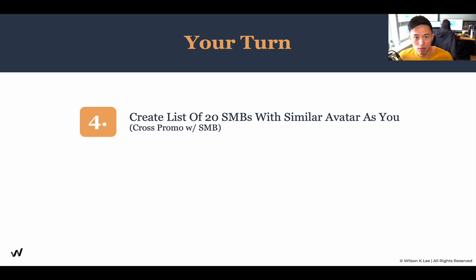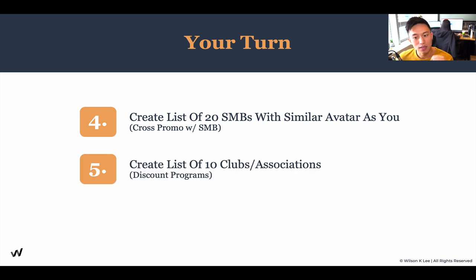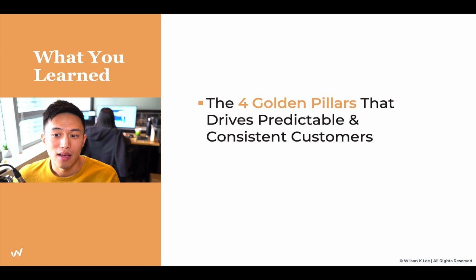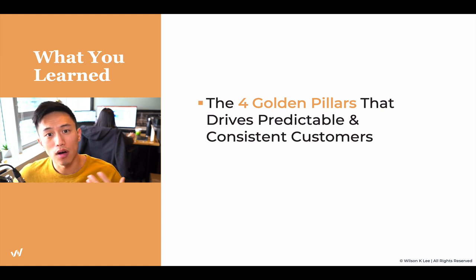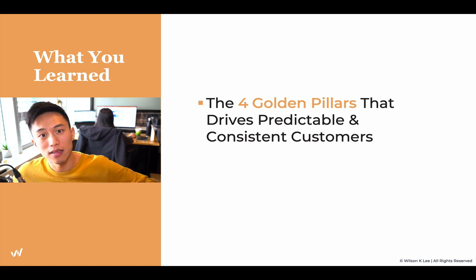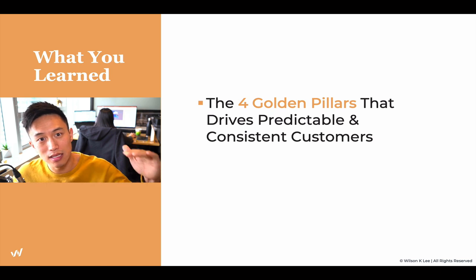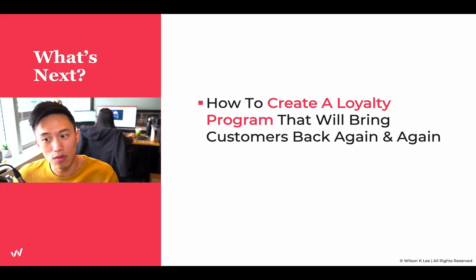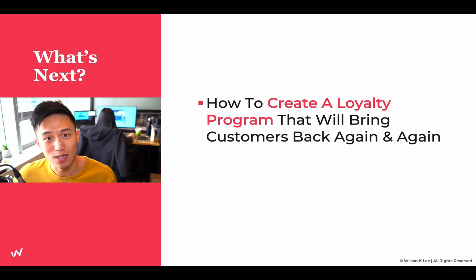Now it is your turn to create your OKRs and KPIs for each pillar. Go out and find 50 local businesses within a five kilometer radius of your restaurant. Create a list of 20 service providers you can offer a win-win affiliate arrangement. Create a list of 20 small and medium-sized businesses with a complementary customer avatar — for us, that's macaroons, coffee, and similar brands. Finally, create a list of 10 clubs and associations with a similar demographic. Download the worksheet and templates below to follow along. In the next lesson, we're going to create a loyalty program to stack on the four golden pillars and get customers to come back again and again.